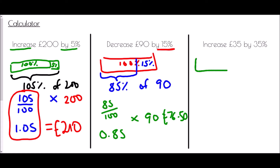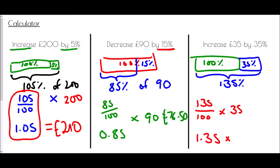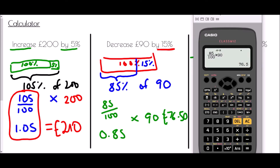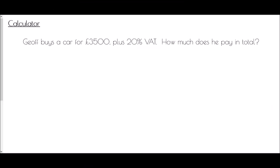Lastly, we increase £35 by 35%. We had 100% and added 35%, giving 135% in total. We use 135% as our multiplier: the fraction 135/100 or the decimal 1.35, multiplied by the original amount of £35. Using the calculator: 1.35 times 35 gives 189/4, which is 47.25, so the answer is £47.25.